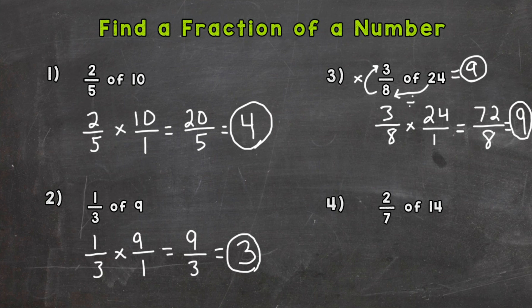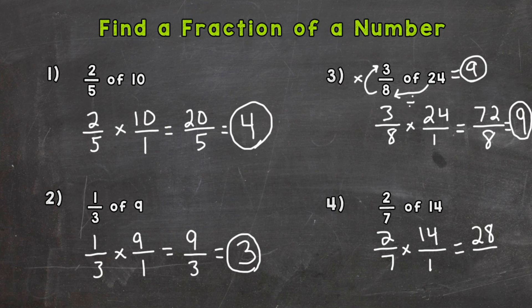For number 4, using the multiplication way: 2 sevenths times 14 over 1. 2 times 14 is 28, and 7 times 1 is 7. We have an improper fraction, so 28 divided by 7 is 4. So 2 sevenths of 14 is 4.